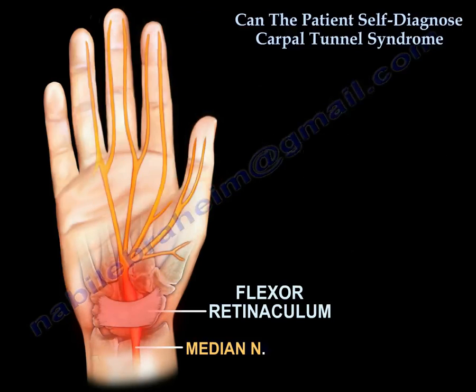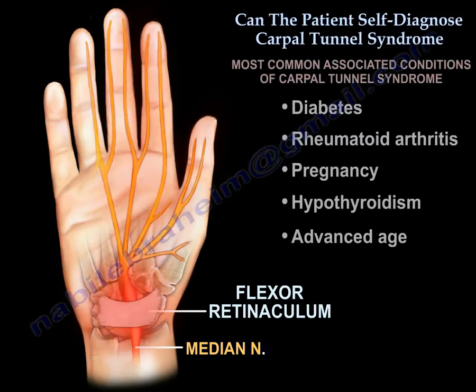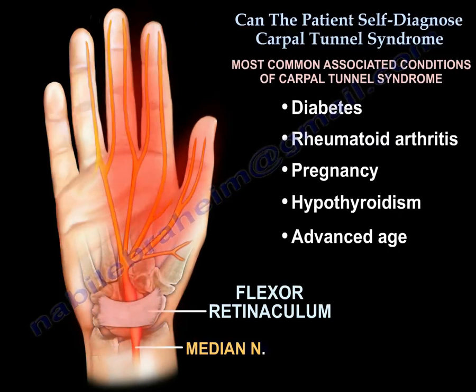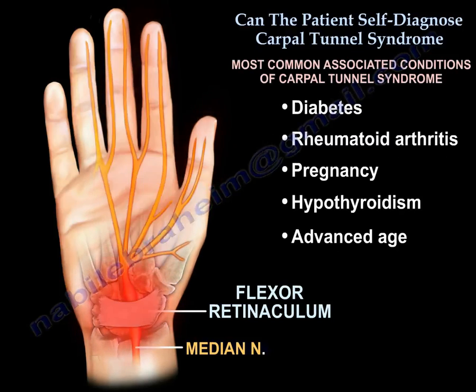The most common associated conditions of Carpal Tunnel Syndrome are diabetes, rheumatoid arthritis, pregnancy, hypothyroidism, and advanced age.